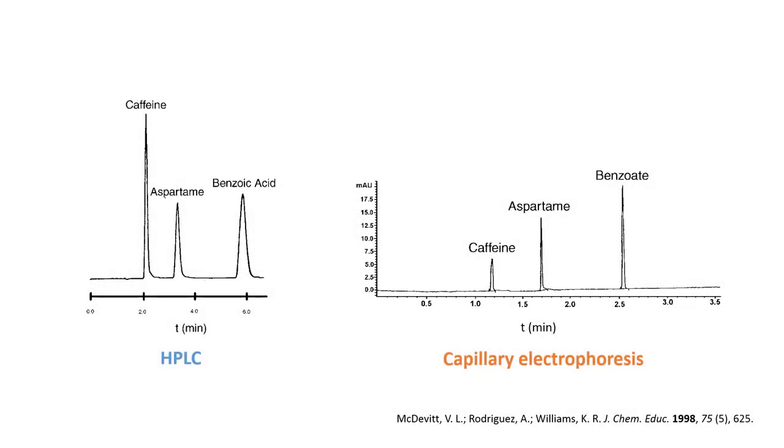On the left-hand side, we have a typical chromatogram obtained from HPLC. And on the right-hand side, we have an example of an electrophoregram obtained from CE. Now, pause this video for one minute. Take a pen and a piece of paper. Try writing down the differences you observe between these two experimental results. Which analytical method is better in this case?